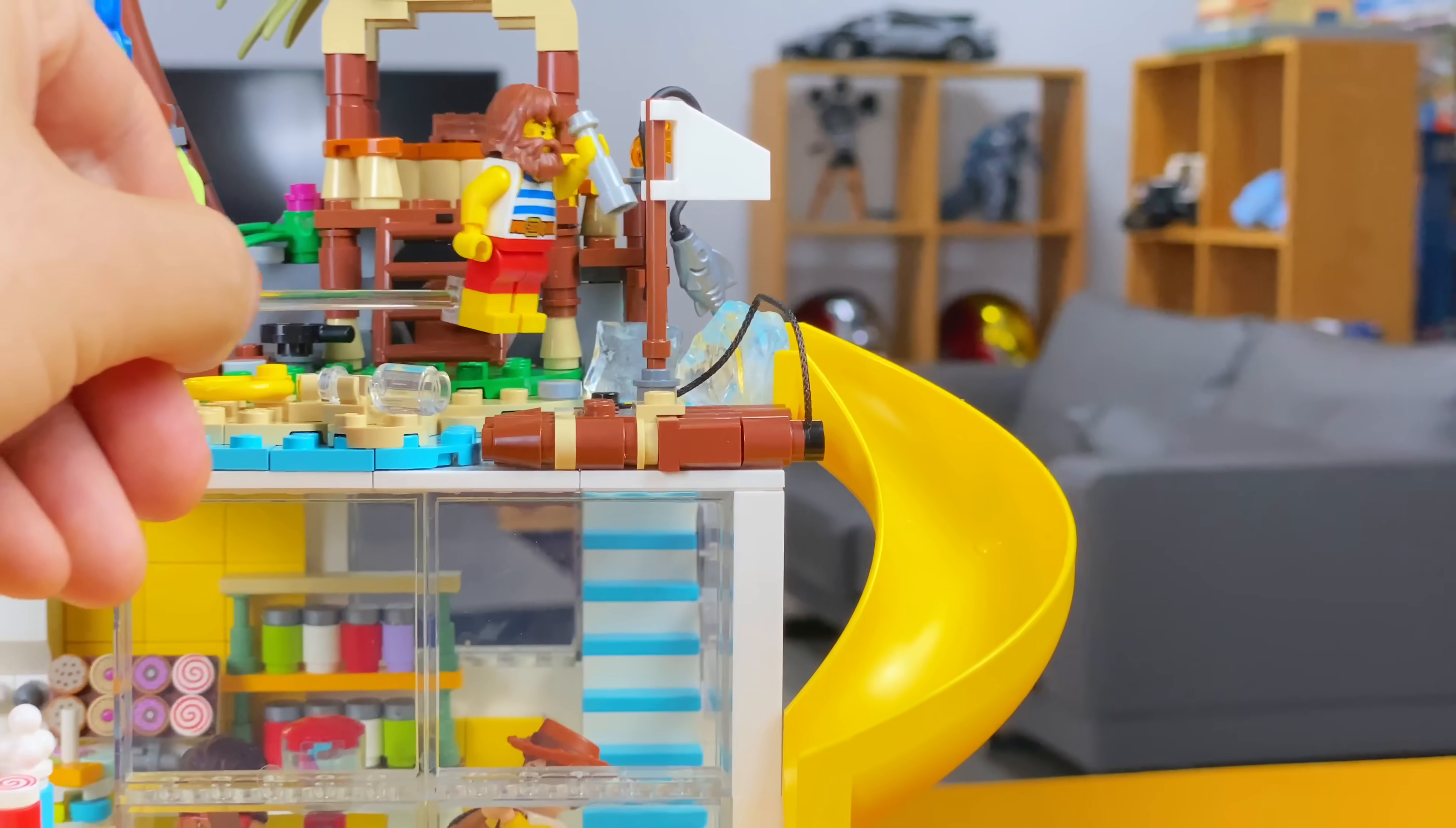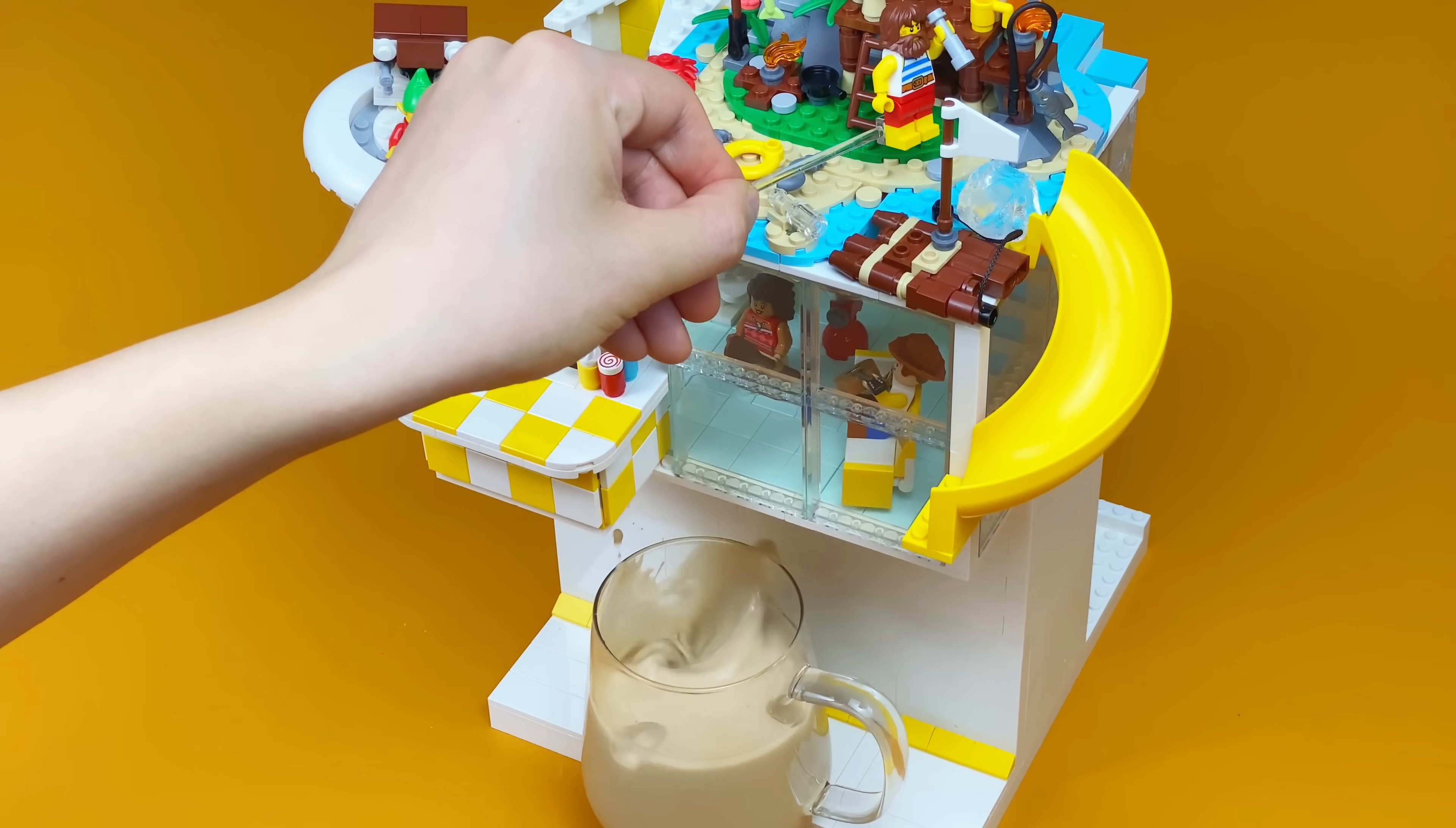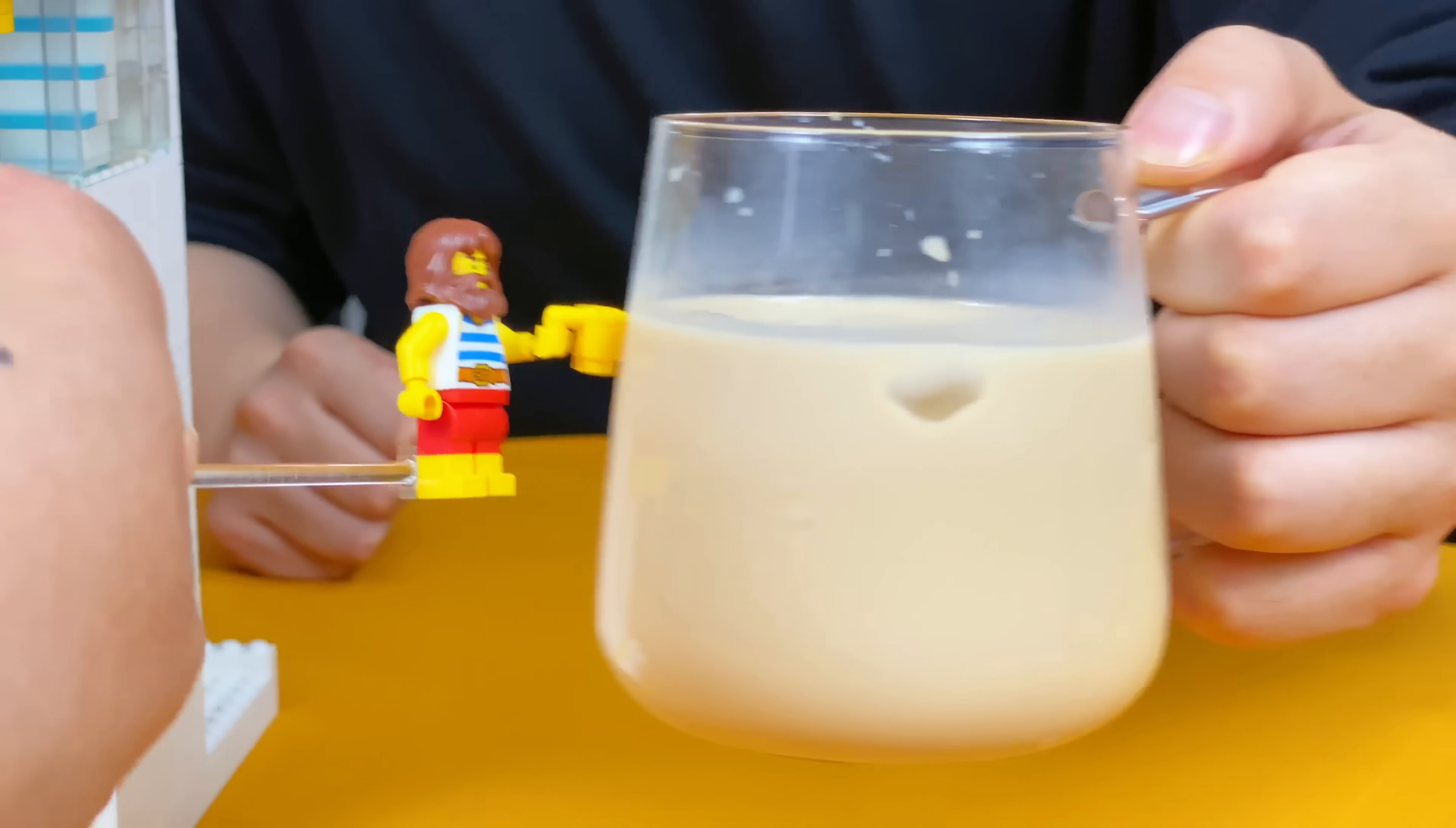If you want some ice, ask Ray for help, and he will slide the ice directly into the cup. And don't ask me how he gets ice on a tropical island.